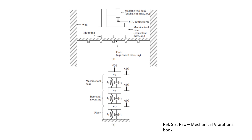Here is an example of a machine mounted on the floor modeled as a three-degree of freedom system. There are three masses: the mass of the floor, the mass of the base, and the mass of the machine tool head. All three masses are connected by spring and damper systems. F(t) is the external cutting force acting on the system, and x1, x2, x3 are the displacements. This is how such systems are modeled as multi-degree of freedom systems.